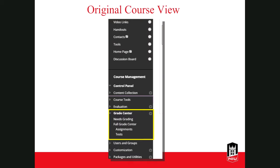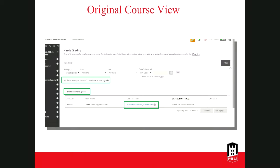If you set up your forum to be graded, you can access discussions that need to be graded from the Grade Center. If you click on Needs Grading, you'll see a list of discussion posts that need grading as students begin to participate. You can also view who has submitted from the full Grade Center — there will be an indication when an assignment needs grading. Click on the student's name to begin grading that assignment.